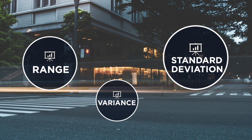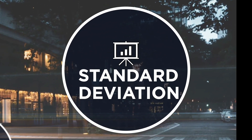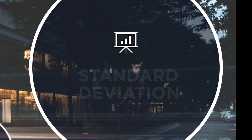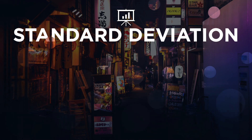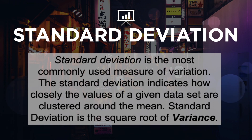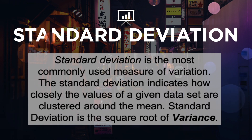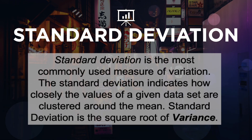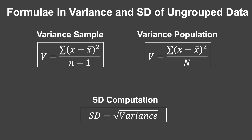The second and third measures of variability are standard deviation and variance. The discussion for these two will be combined since one is just the continuation of the other. Standard deviation is the most commonly used measure of variation. It indicates how closely the values of a given data set are clustered around the mean. Standard deviation is the square root of variance.